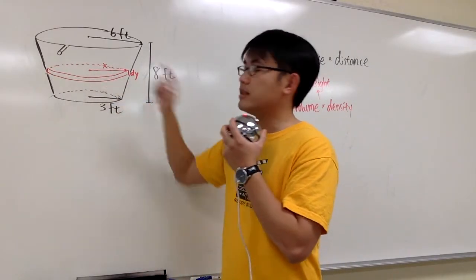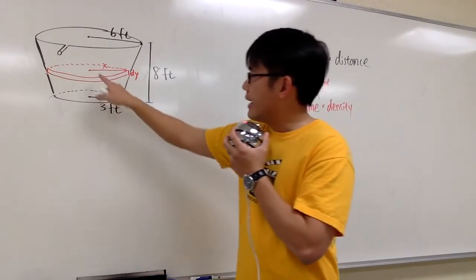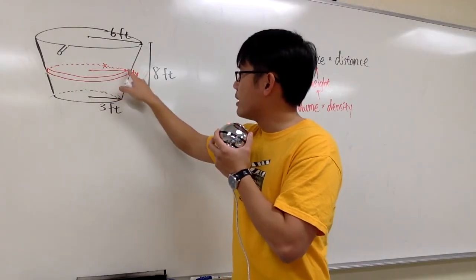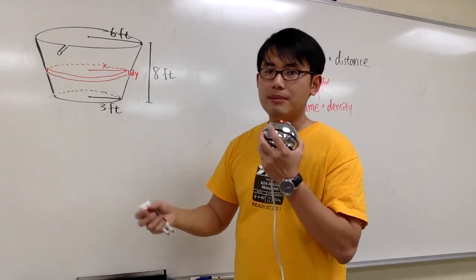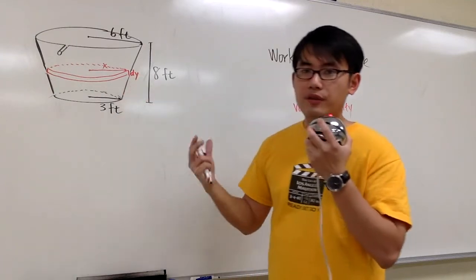Now the question is, how can we write a formula for the radius? And then we can just do pi r squared times the thickness, and we can figure out the volume.